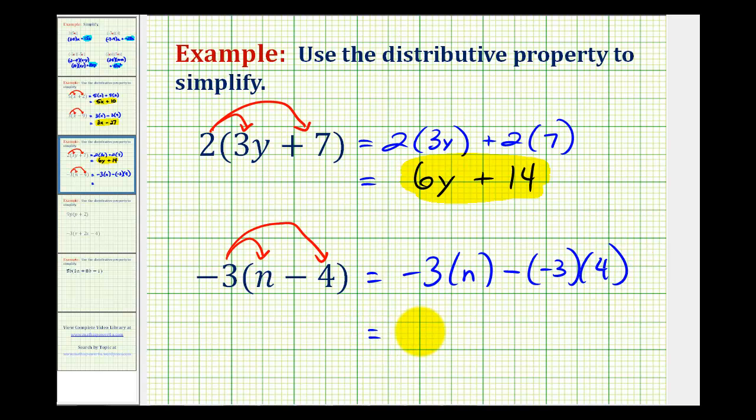So negative three times n is negative three n, and here we have to be careful. Therefore, we're going to have minus negative three times four, which would be minus negative twelve. But remember, subtracting a negative is the same as adding a positive, so this becomes plus positive twelve.